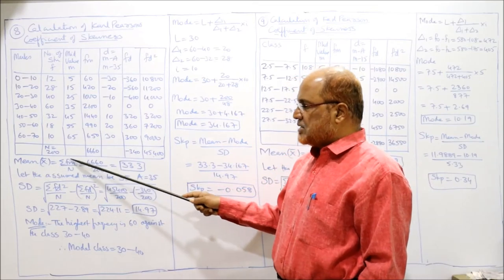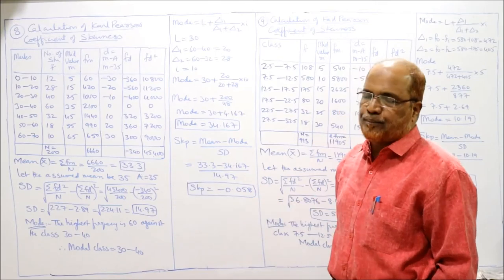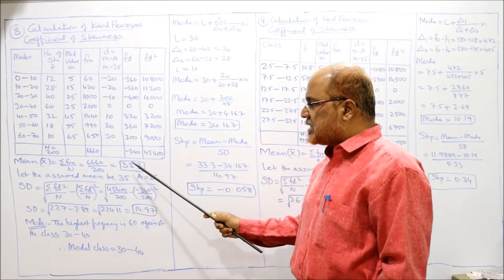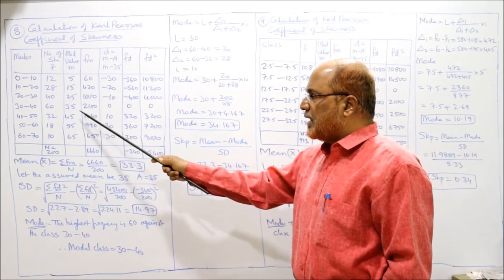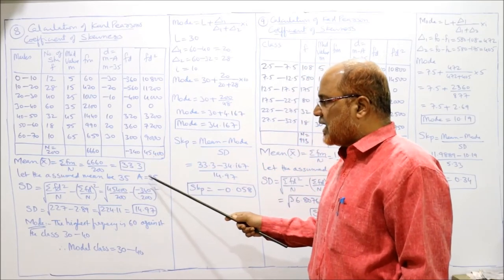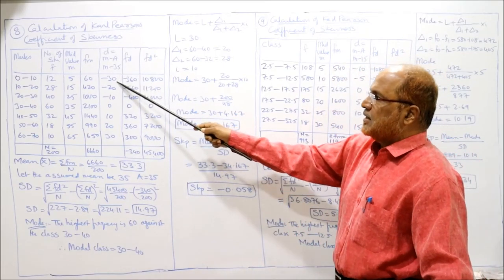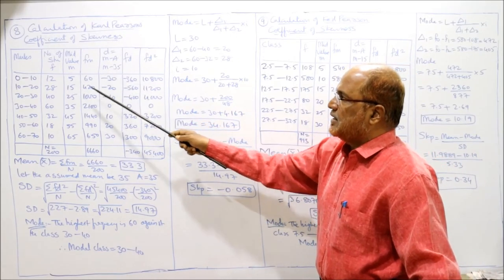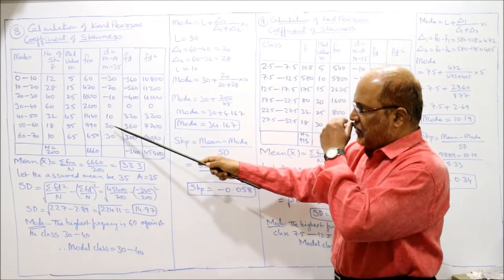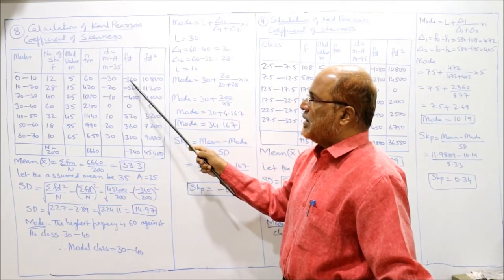Mean = Σfm/n = 6660/200 = 33.3. Since 33.3 is a fraction and mid values are whole numbers, we select the nearest mid value: 35. Assumed mean A = 35. Deviations: 5−35 = −30, 15−35 = −20, 25−35 = −10, 35−35 = 0, then 10, 20, 30.